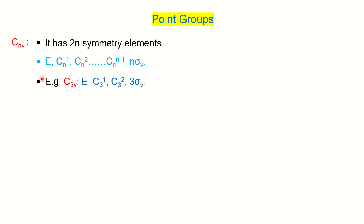Taking C3V as an example, the total symmetry operations are 6. You can apply this formula to find the complete list. In exam questions, you are typically asked to find the point group of a molecule and list all symmetry operations, so once you confirm the point group, you can write down the complete list.